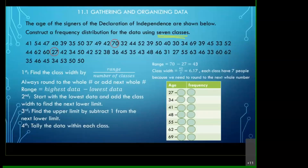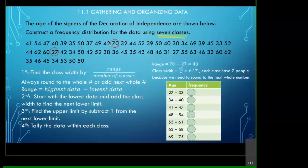The upper limit of each class is one number below the next class's lower limit. So if the next lower limit is 34, the upper limit of the current class is 33. Similarly, 33 plus 7 gives 40, 40 plus 7 gives 47, and so forth. We end up with seven classes in total, each spanning seven data values, based on the class width we calculated.